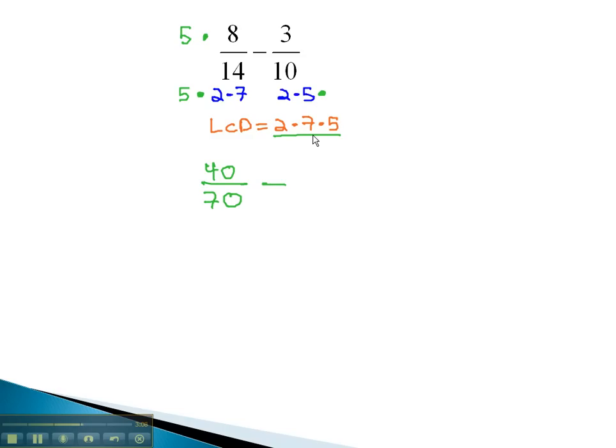This second fraction is missing the factor of 7. So, we will multiply by the missing factor 7 in both the numerator and denominator. 3 times 7 is 21 over 2 times 5 times 7, which is 70.